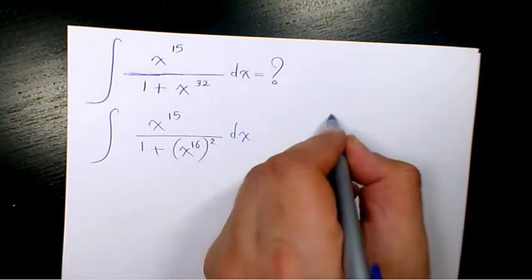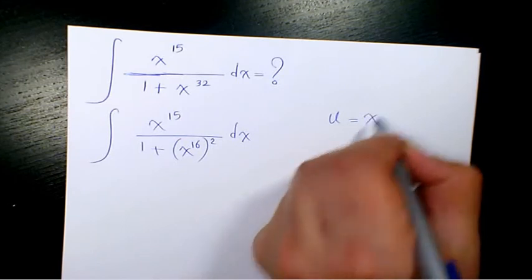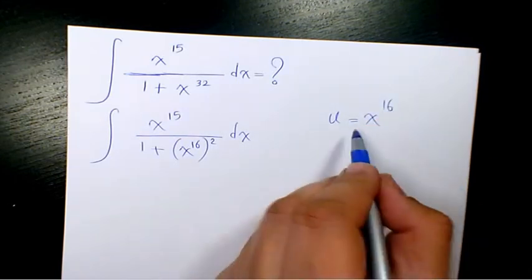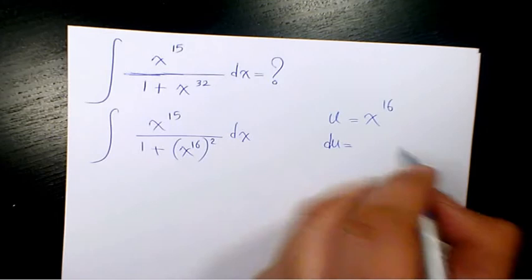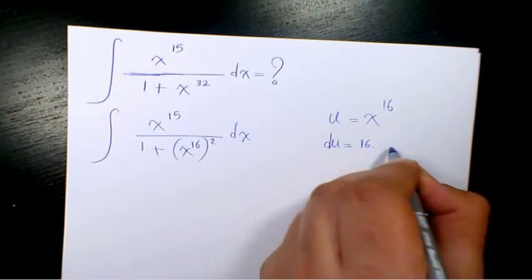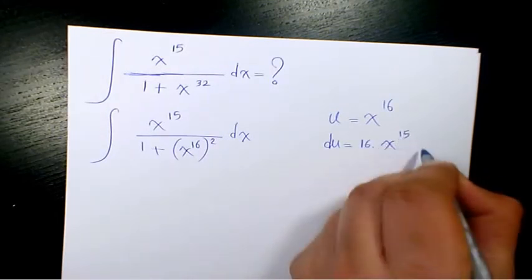Then, using the substitution method, I'm going to consider u as x to the power of 16. So du will be the derivative of x to the power of 16, which will be 16 times x to the power of 15 dx.